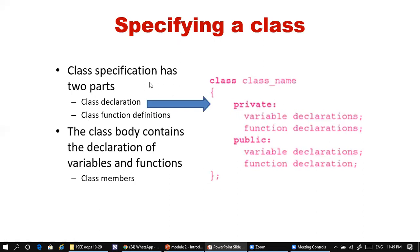How is a class written? You write the keyword 'class' followed by the class name. A class has two parts: a private part and a public part. Both private and public parts can have variable declarations. The start of the class is marked with an open brace and the end with a closed brace terminated with a semicolon. The class name is a user-defined identifier, while private and public are keywords.